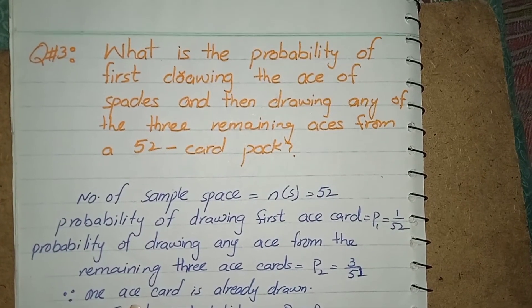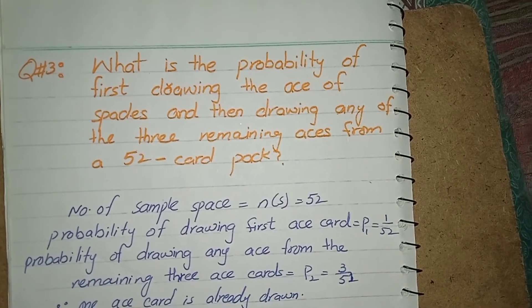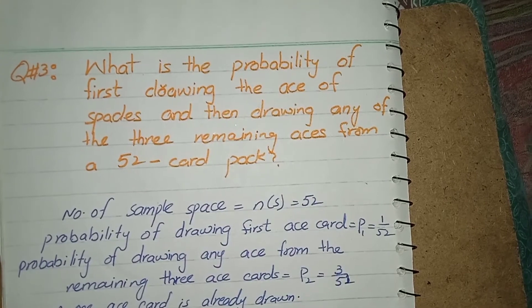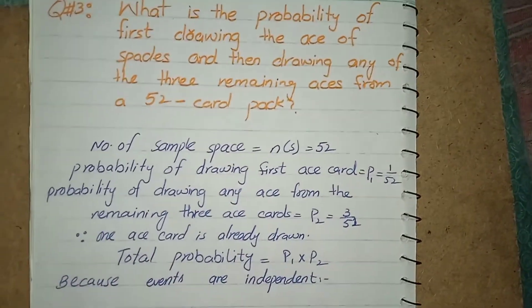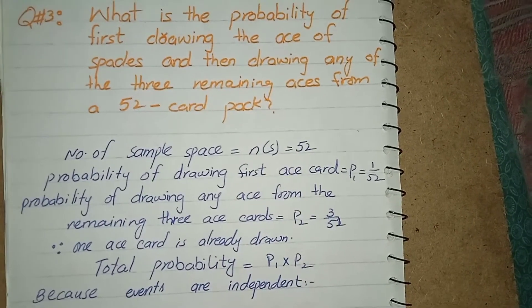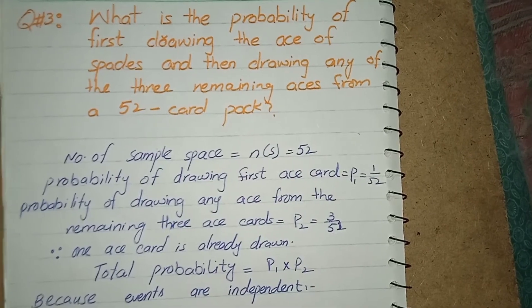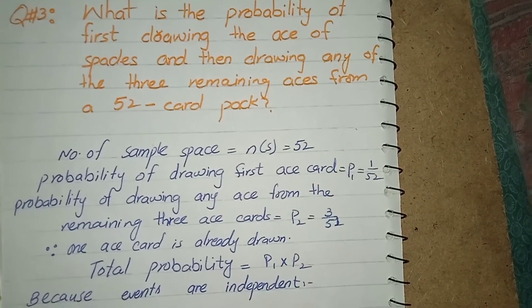The question number third is that what is the probability of first drawing the ace of spades and then drawing any of three remaining aces from a 52 card pack. Number of sample space as we know that in a set of cards is 52. Probability of drawing first ace card would be 1 over 52.